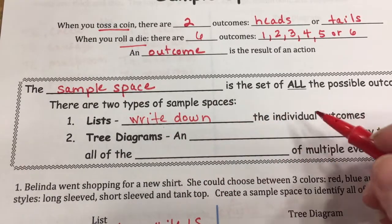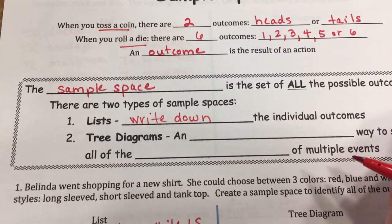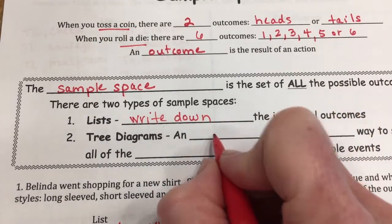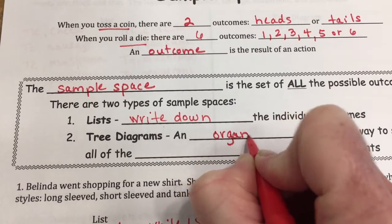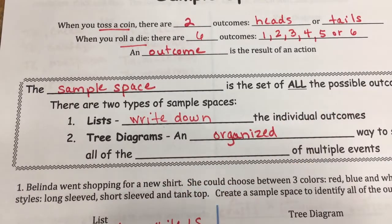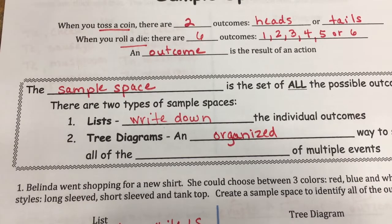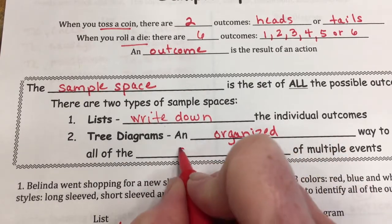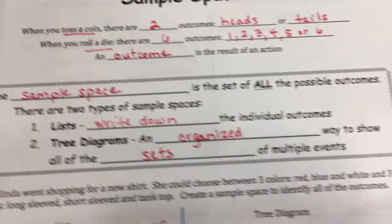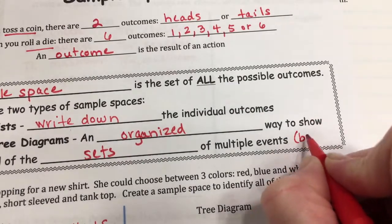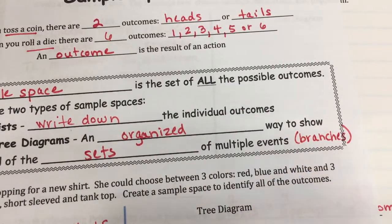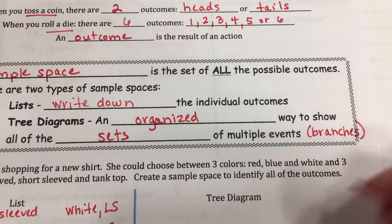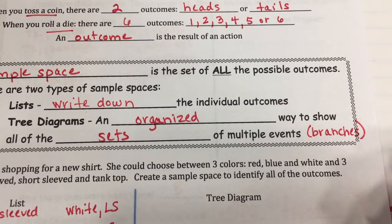Last time we just wrote down all the individual actions that could have happened. The tree diagram is what we're going to use now — it's basically an organized way to show all the sets of multiple events. You do this using branches, that's why it's called a tree diagram. If you remember prime factorization where we used branches, it's kind of the same idea.